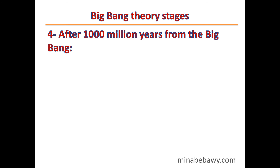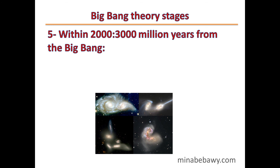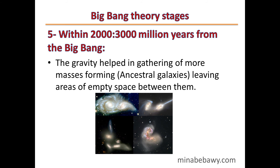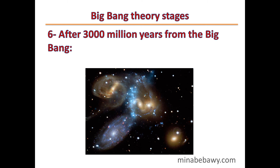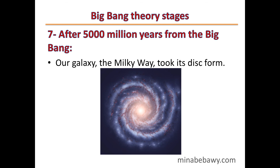Stage 4 — After 1,000 million years from the Big Bang, the gas clouds merged forming homogeneous masses which would produce the matter of galaxies. Stage 5 — Within 2,000 to 3,000 million years from the Big Bang, gravity held in gathering more masses, forming ancestral galaxies, leaving areas of empty space between them. Stage 6 — After 3,000 million years, galaxies began to form. Stage 7 — After 5,000 million years, our galaxy, the Milky Way, took its disc form with its spiral arms.